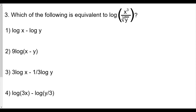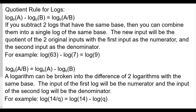Question three asks which is equivalent to log of (x cubed divided by the cube root of y). For this we need the quotient rule: log base b of a minus log base b of b equals log base b of (a/b). If you subtract two logs at the same base, you can combine them into a single log whose input is the quotient. For example, log 63 minus log 7 equals log 9.